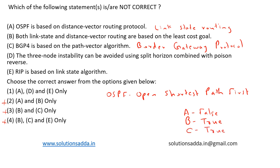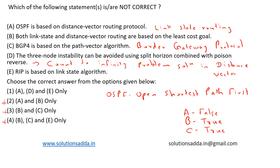Now let's see option D: three-node instability can be avoided using split horizon combined with poison reverse. This statement is false. Split horizon and poison reverse are used to avoid the count-to-infinity problem in distance vector routing algorithms — they are not used for three-node instability. So D is false.